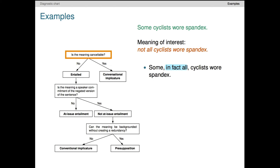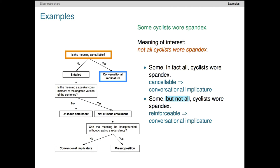First we run the cancellation test. The cancellation is this appositive 'in fact all,' meaning in fact all the cyclists wore spandex, which is the negation of our target meaning. The result seems fine, so we can conclude that the target meaning is a conversational implicature. This leads us to expect that the meaning will be reinforceable as well. Here the appositive 'but not all' just directly expresses the target meaning. The result seems non-redundant, so the test behaves in accord with cancelability, and we can stand firm on our original conversational implicature diagnosis.